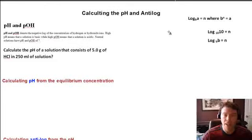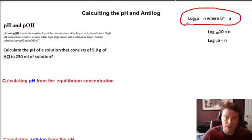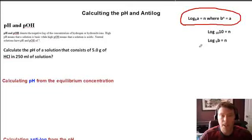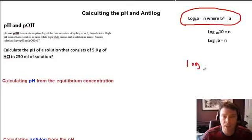Before we get into calculating pH, let's look at the relationship between logarithms and exponential functions. The log base b of a equals n is really saying the same thing as b raised to the exponent n equals a. They are inverses of each other — this is the exponential form, and this is the inverse, the logarithmic form.